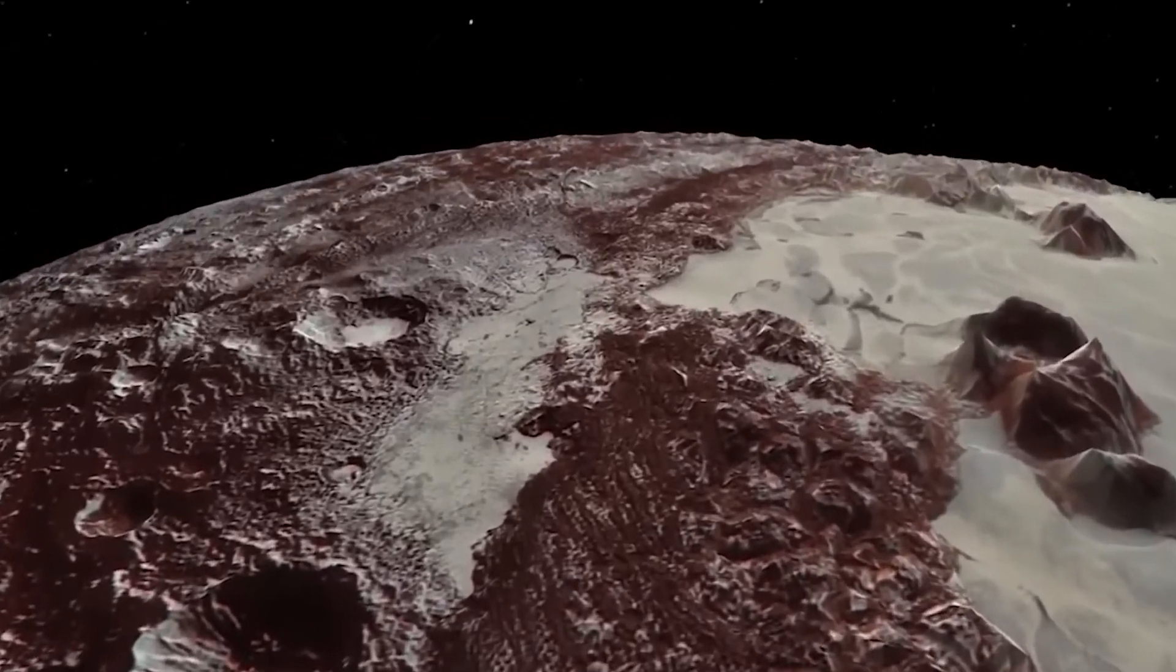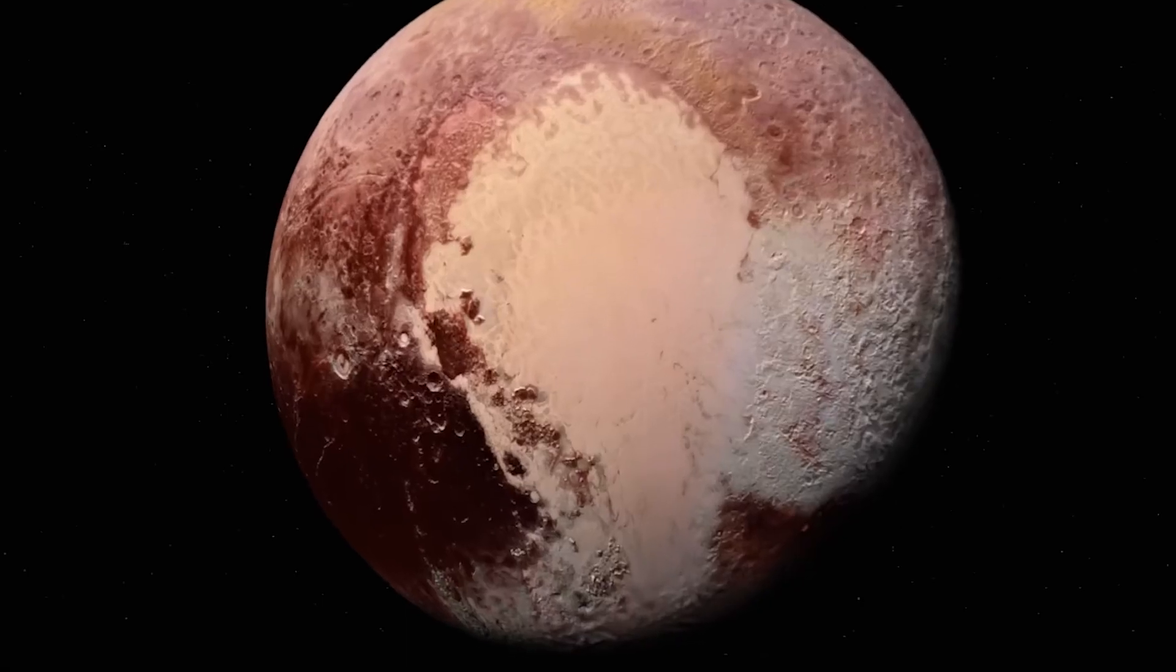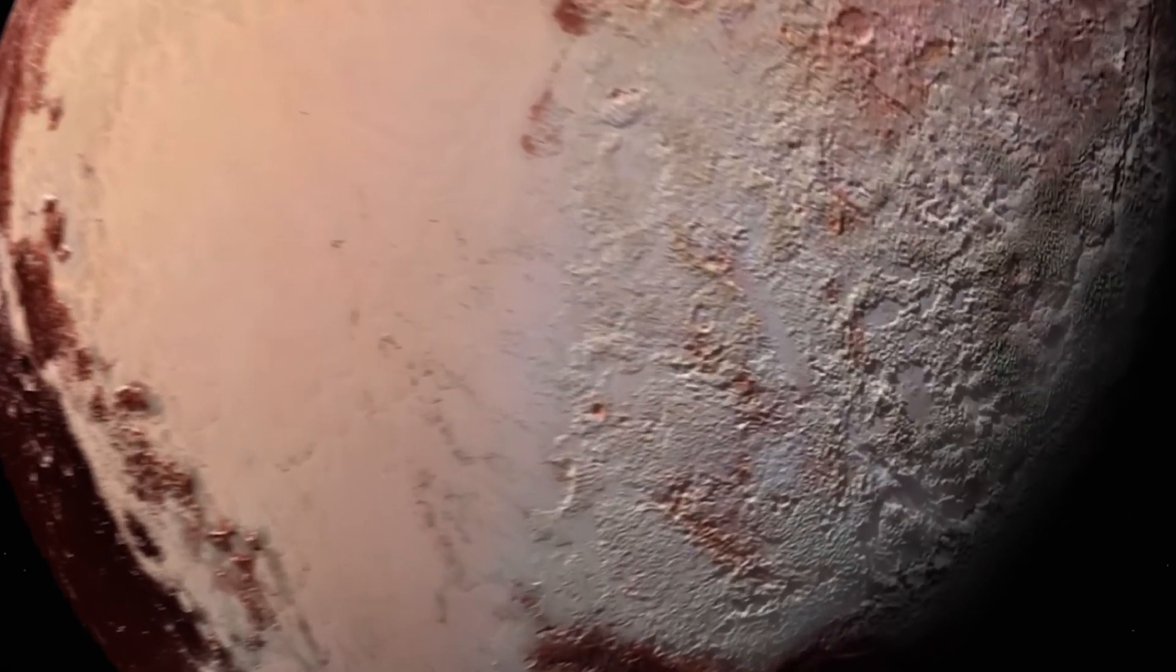Some people still call it a planet, but often it's called a dwarf planet. That's what the International Astronomical Union says—the group responsible for naming things. The issue with Pluto is you're trying to define a fuzzy line between a planet and not a planet, and it boils down to size.